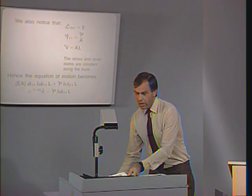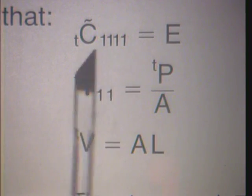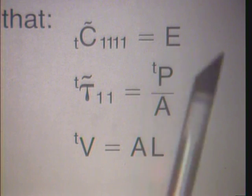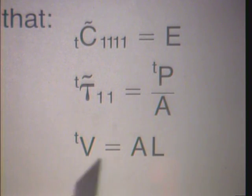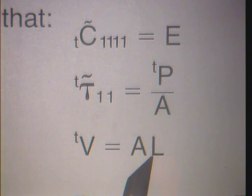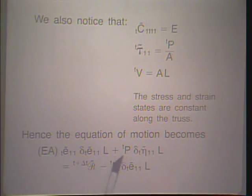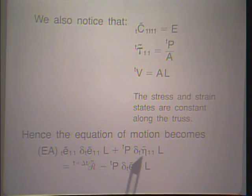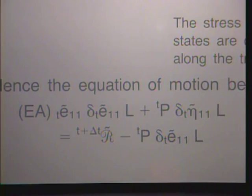We identify the constitutive tensor term to be simply Young's modulus, and the stress term to be simply the force in the truss divided by the cross-sectional area. The volume of the truss is given accordingly. Notice that the length of the truss is assumed constant — we only consider small strain conditions. Substituting this information into the general equation, we directly arrive at a simplified equation. We now have to evaluate the curled strain terms.